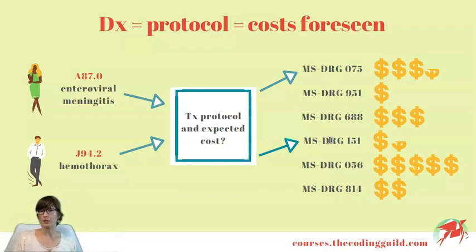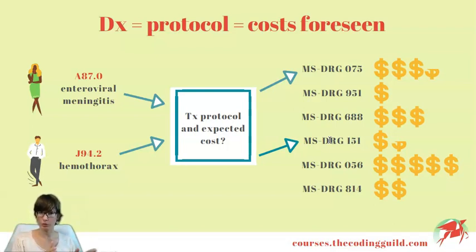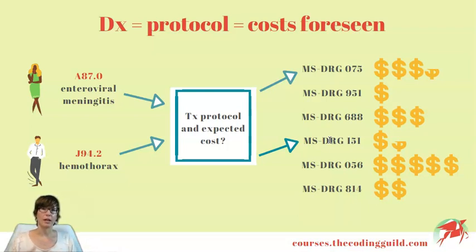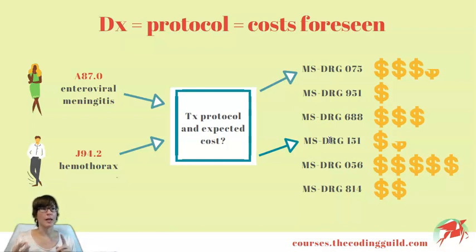The general idea with this system is that for average cases CMS will not adjust the payment. They assume how much this patient will cost based on the protocol, price the package according to their expectation, and then pay that price. For normal cases, this package deal price is all the facility gets — this is how CMS saves money. This can be either good or bad for the facility, because if they are efficient and can treat the patient for less than what they get from CMS, they can keep that amount and make a profit. On the other hand, if they are wasteful, they will lose on that patient. Of course there are always cases where CMS acknowledges the need for additional payment.